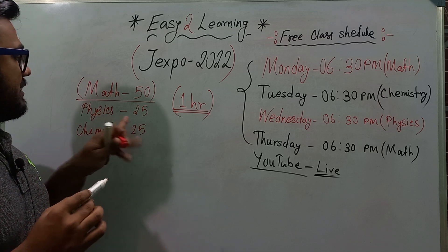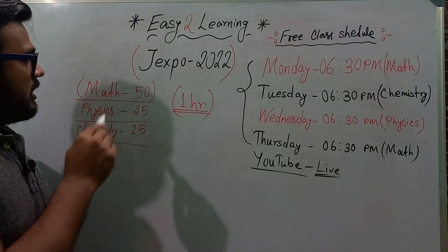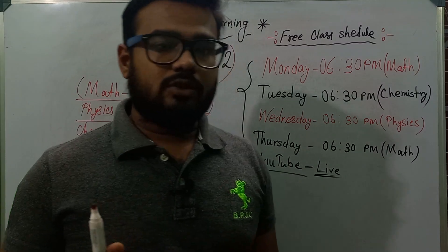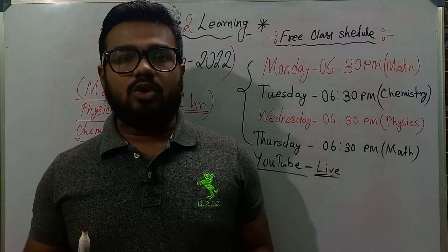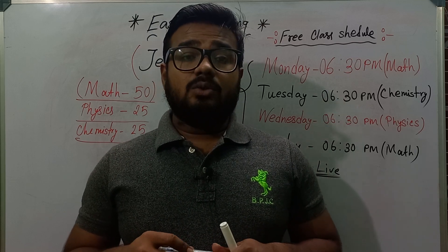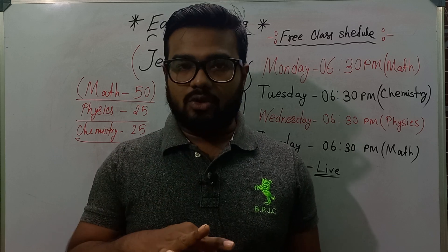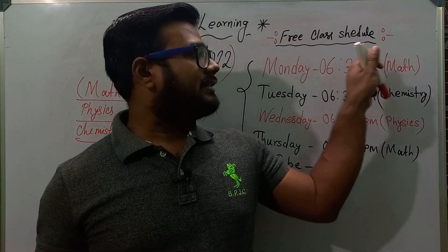So Physics is 25 and Chemistry is 25. So this is the total marks distribution. So everyone will follow the class. If you have a free class, you will have a question, so you will have a WhatsApp group. You will join the next Monday class.